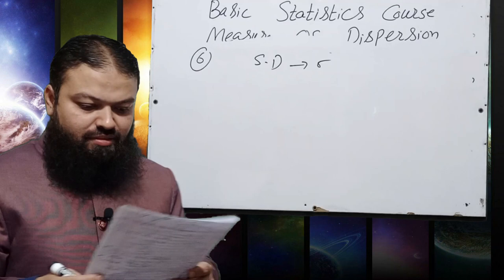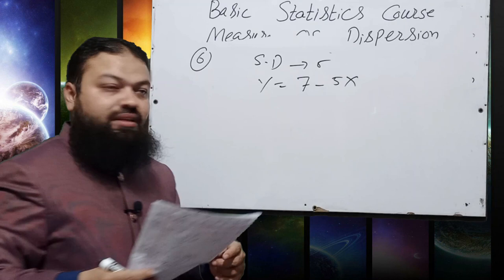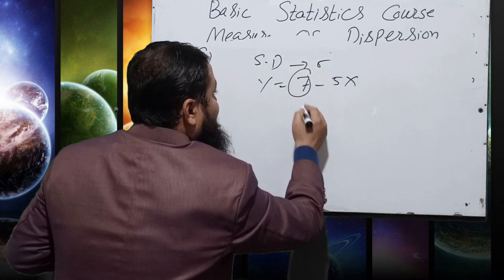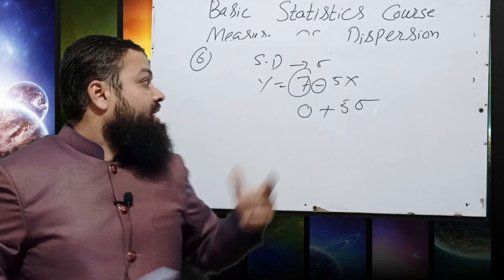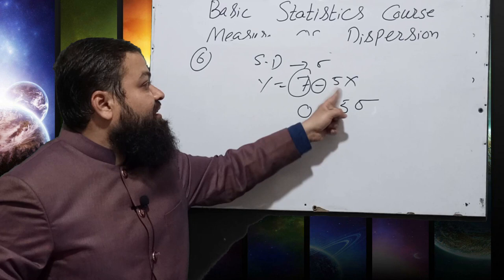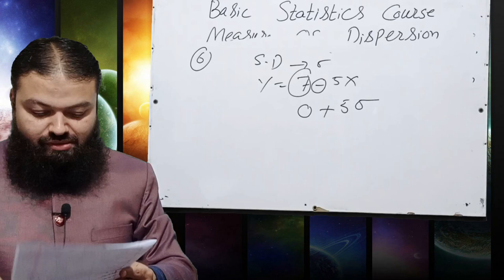Question number 6: If the standard deviation of variable X is σ, then the standard deviation of Y = 7 − 5X is? Applying standard deviation to both sides: the standard deviation of a constant is 0, the minus becomes plus, and 5 remains as is. So the answer is 5σ. Note: for variance, you square the coefficient (25σ²), but for standard deviation, the coefficient stays as 5σ.